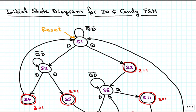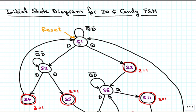Here is an initial state diagram for that candy dispenser. The reset state is S1, and we stay in S1 as long as no coins are being put in, shown here by the self-loop around S1 with Q=0 and D=0, meaning neither a quarter nor a dime is being put in. The candy machine is a mechanical machine, so things happen relatively slowly, and the electronic part can go much faster, staying in states for several clock cycles until the next coin is deposited. The machine also has just one slot for coins, so you can put in either a dime or a quarter, but not both at the same time.